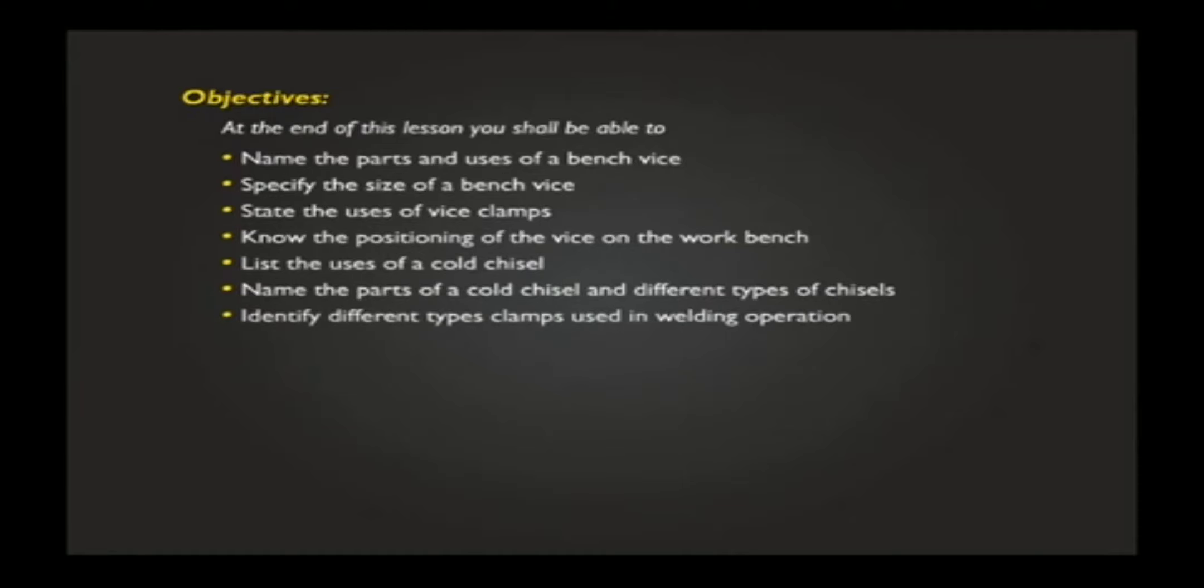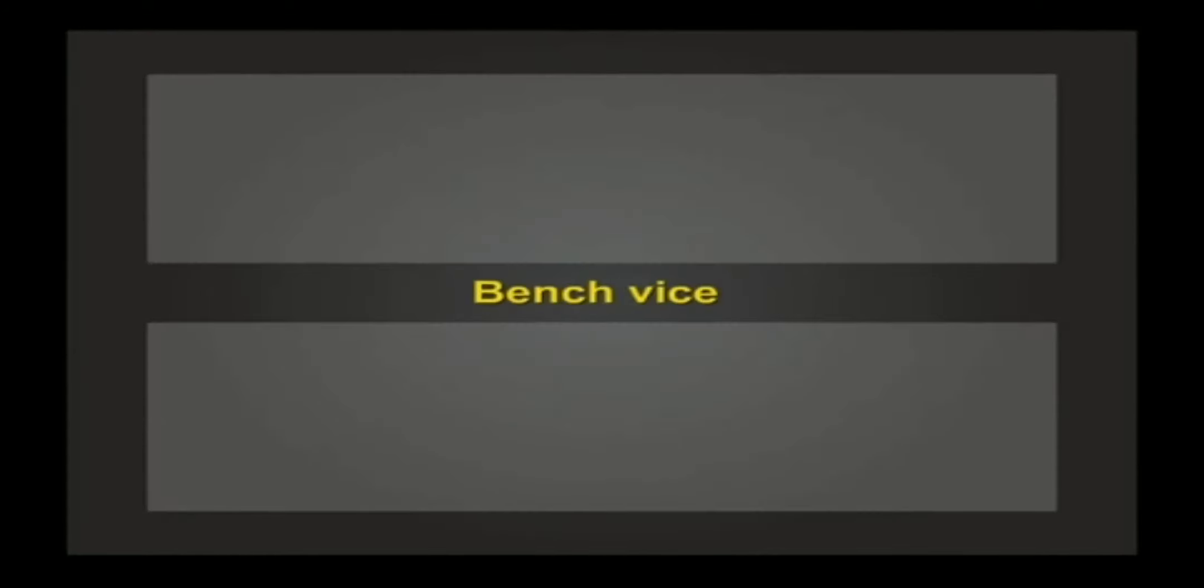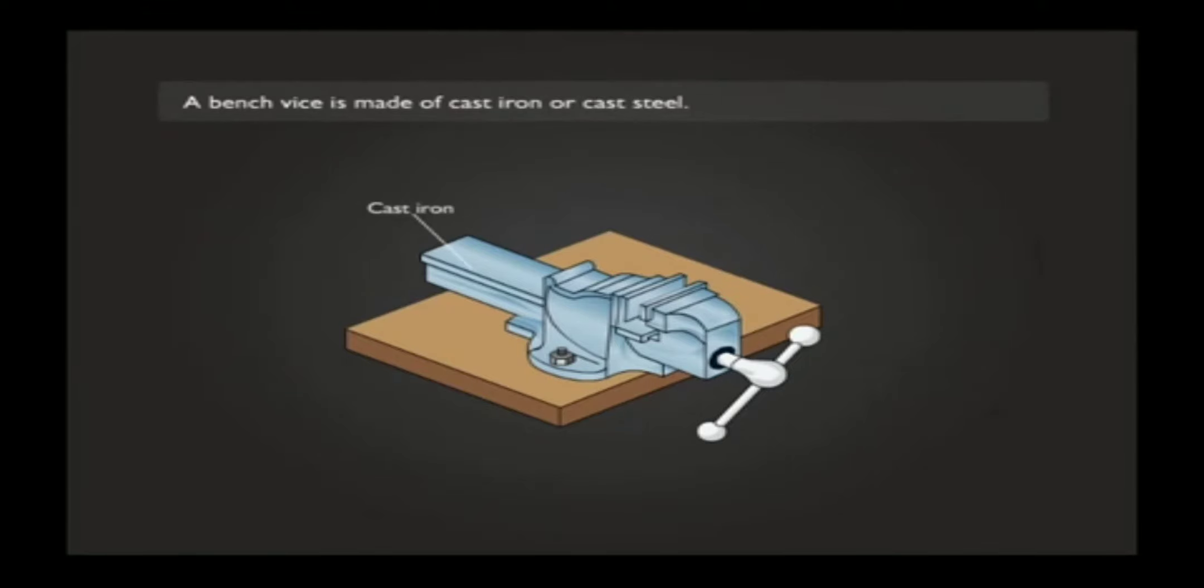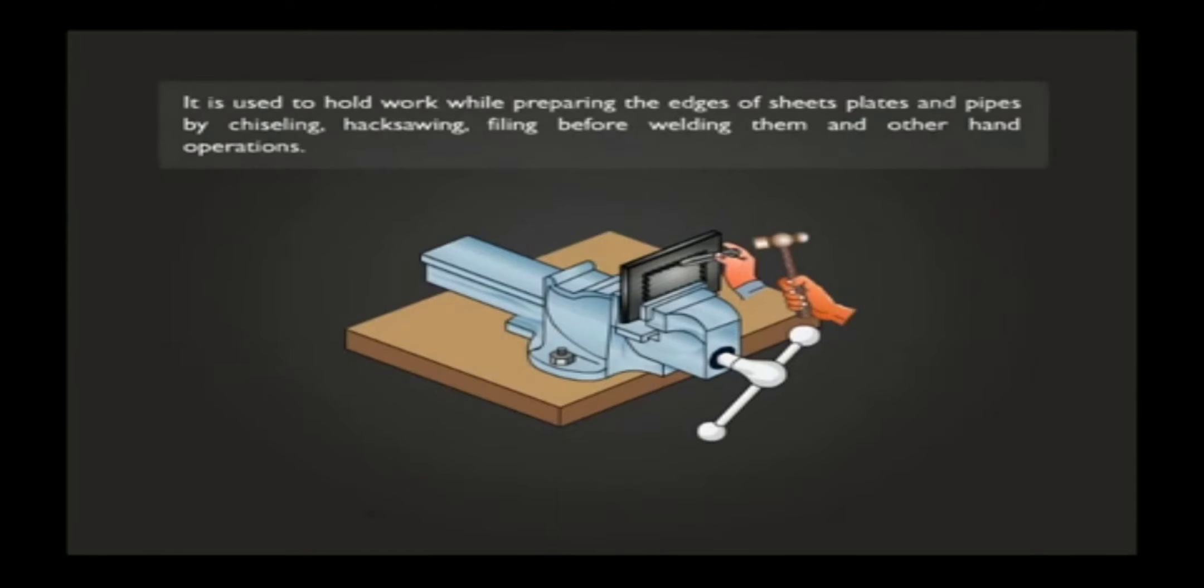Identify the different types of clamps used in welding operation and state the uses of clamps. Vises are used for holding workpieces. They are available in different types. The vise used for bench work is called the bench vise.